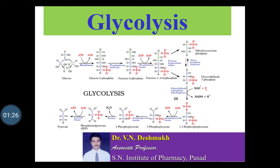Similarly, glycolysis also produces pyruvate which is then oxidized further to create more ATP molecules. Glycolysis involves a single molecule of 6-carbon glucose broken down into 2 moles of 3-carbon pyruvate by a sequence of 10 enzyme-catalyzed sequential reactions. These reactions are grouped under 2 phases, phase 1 and phase 2. Phase 1 comprises preparatory reactions which are not redox reactions and do not release energy, but instead lead to the production of a critical intermediate of the pathway.